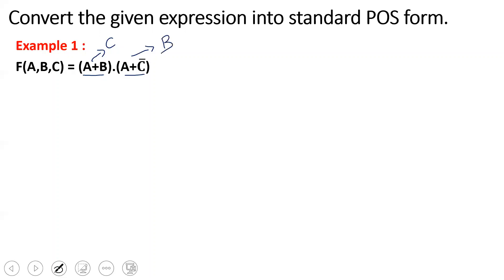Step 1: identify the missing variable in each max term. In the first max term (A + B), the C variable is missing. In the second max term (A + C-bar), the B variable is missing.